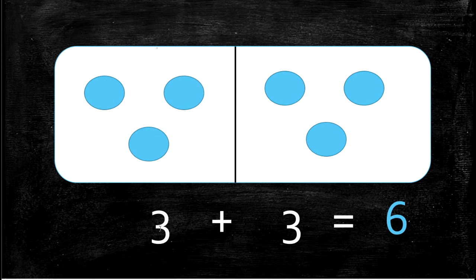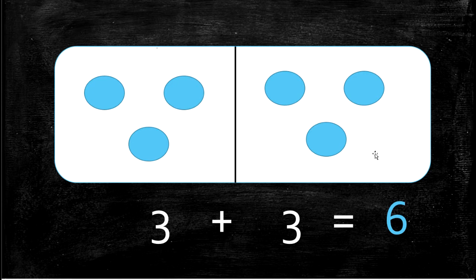The next double is 3 plus 3. We have 3 plus 3 — how many all together? 1, 2, 3, 4, 5, 6. 6 all together. And if we had 6 M&Ms and you wanted to split them with your friend, you would have 3 and your friend would have 3. So you would split them evenly.